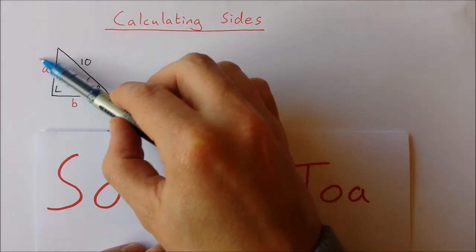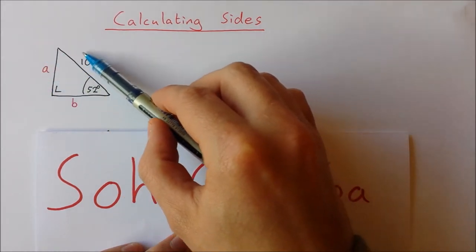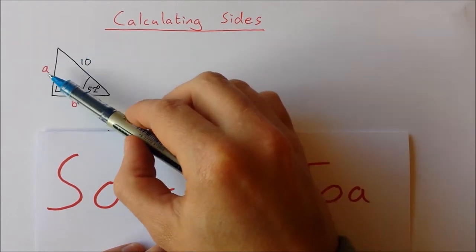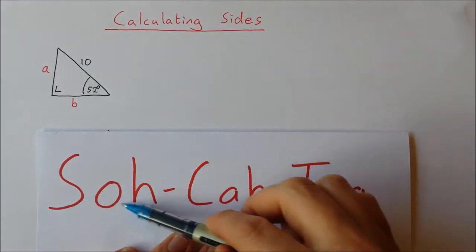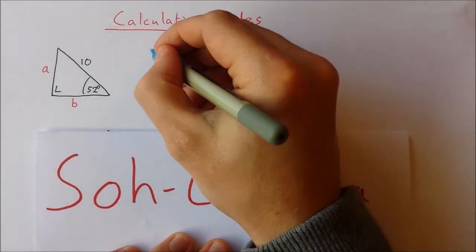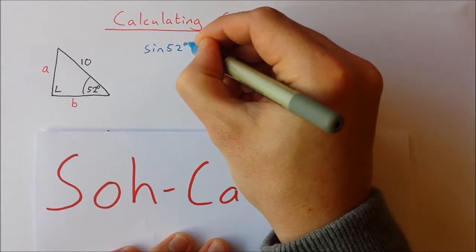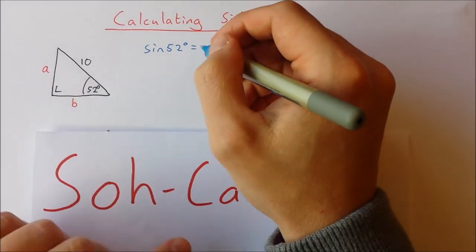So opposite and hypotenuse means I'm going to use sine. The sine of 52 degrees is equal to the opposite, which is 'a', over the hypotenuse, which is 10.